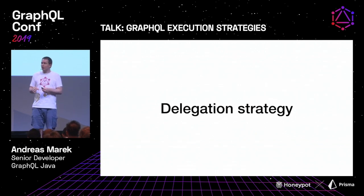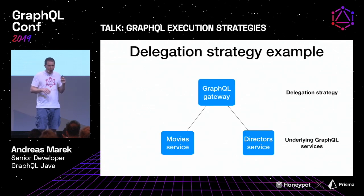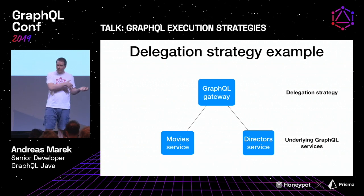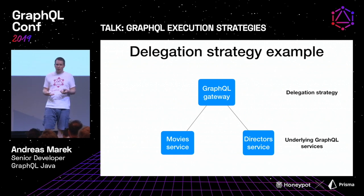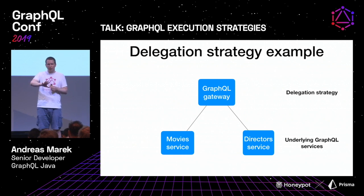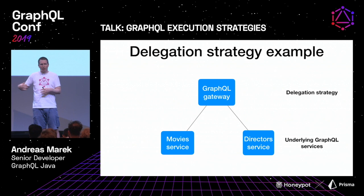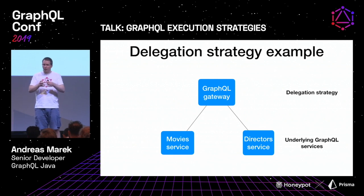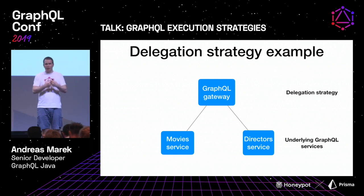Now we look at a different kind of strategy: the delegation strategy. This is the same area touched by Apollo Federation and schema composition. This strategy helps you implement a GraphQL gateway where some logic lives in the gateway, but the actual GraphQL execution is handled by underlying services — that's where the name delegation comes from. You transform or trim the query and delegate execution to an underlying service, then combine the results and return a valid answer to the client.